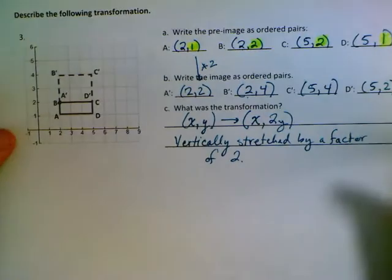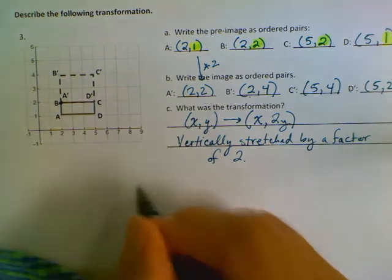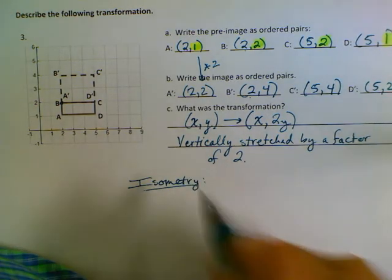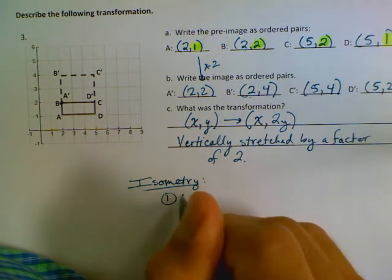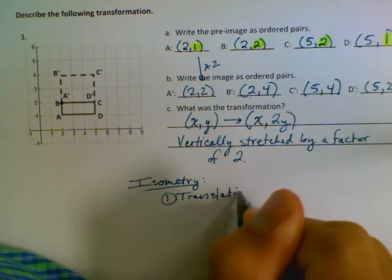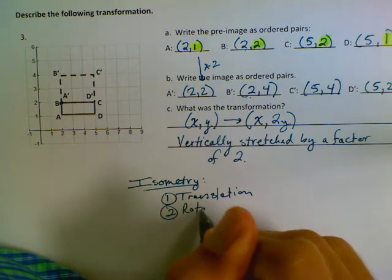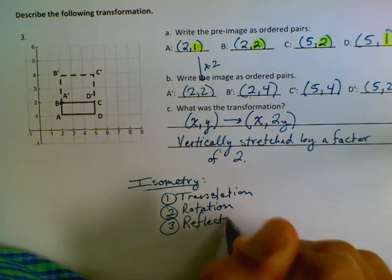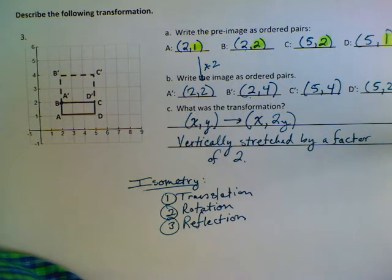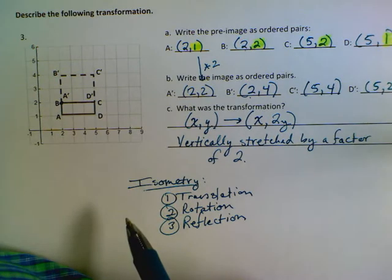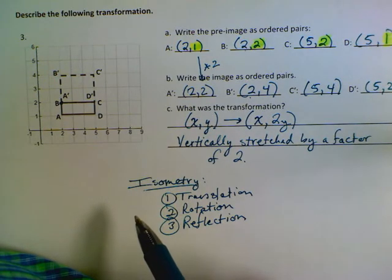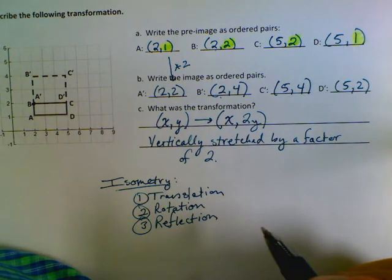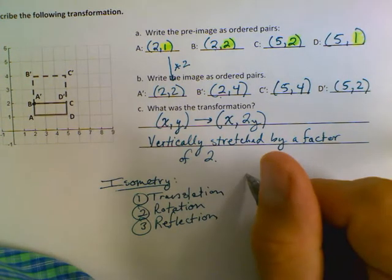Now I told you guys on a different video that the word isometry is super important, so I'm just going to review those. Isometry. And isometry, there are three types: translation, rotation, and reflection. I wonder if you guys think that these are isometries. So what we study today are not isometries. Transformations that are vertically stretched or horizontally stretched are not isometries.